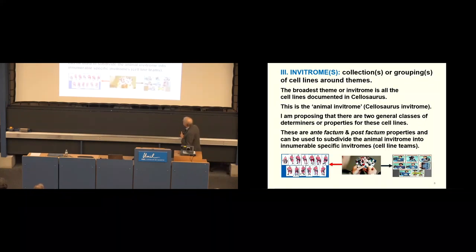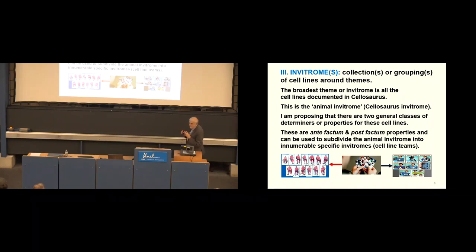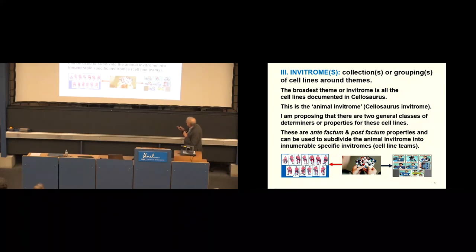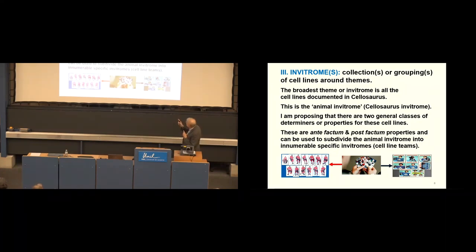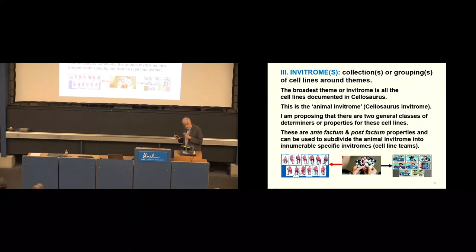And then we come to invitrome. So I'm defining this as a collection or grouping of cell lines around a theme. And the broadest theme would be all the animal cell lines that have been reported in the literature. And so I would call that the animal invitrome, or another way of saying it, it's the Cellosaurus invitrome. And I am proposing there are two general classes of determiners or properties for these cell lines that I'm going to use to subdivide the animal invitrome. So these are the antifactum or post-factum properties can be used to subdivide the animal invitrome into innumerable specific invitromes. It's sort of like I'm a Canadian collecting hockey cards. And you have a whole bunch of teams and you could put them into the Canadians or the Toronto Maple Leafs, the two most famous teams in the world.